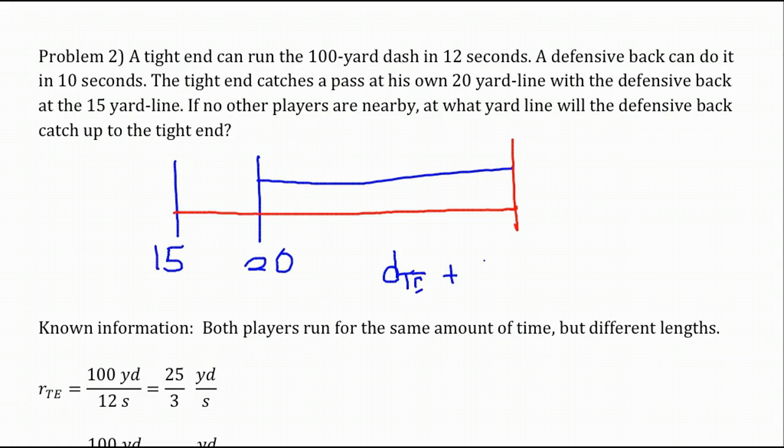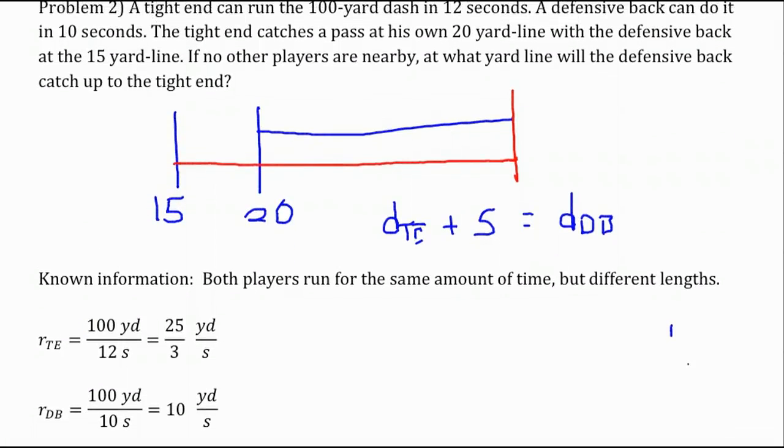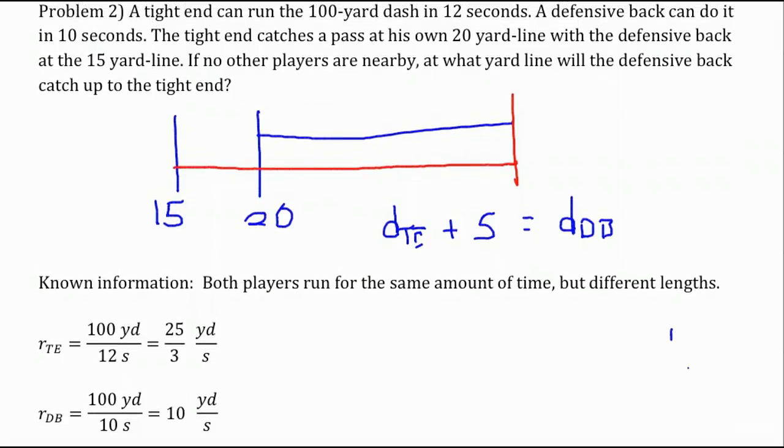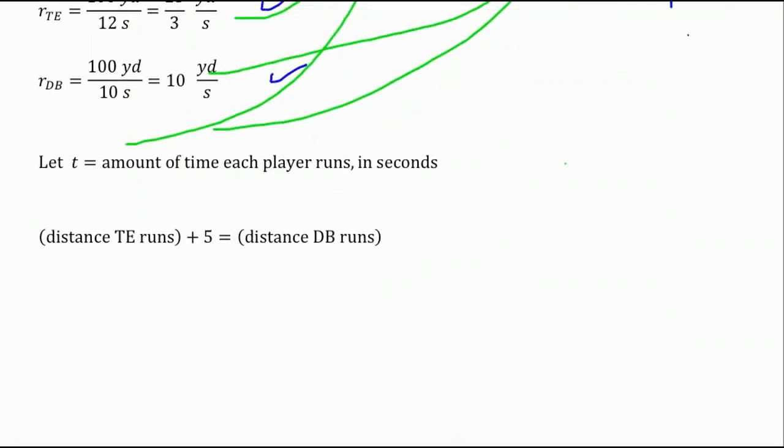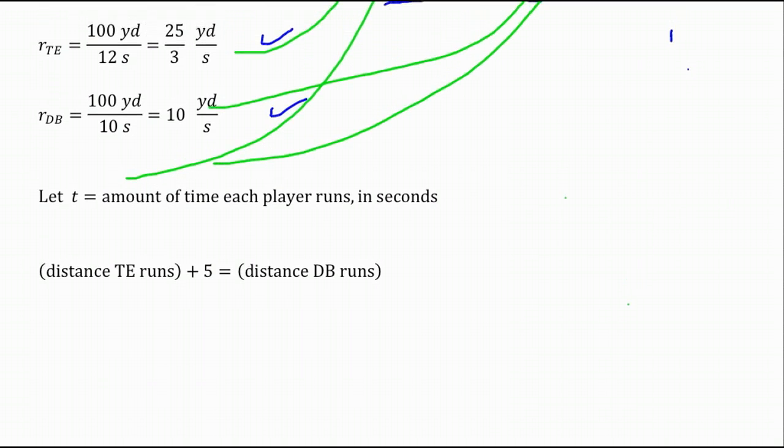We want to know at what yard line will the defensive back catch the tight end. The tight end is going to go a shorter distance than the defensive back. If you take the distance the tight end ran and add 5 to it, you're going to get the distance that the defensive back ran. What we know from the problem is that both players run for the same amount of time, but the lengths are a little bit different. We can compute the rates. The rate of speed of the tight end is going to be 100 over 12 or 25 over 3 yards per second. For the defensive back, it's going to be 10 yards per second after we simplify. The unknown in this case is going to be T. We're going to use that to then determine distance after we determine the time that they've ran for.